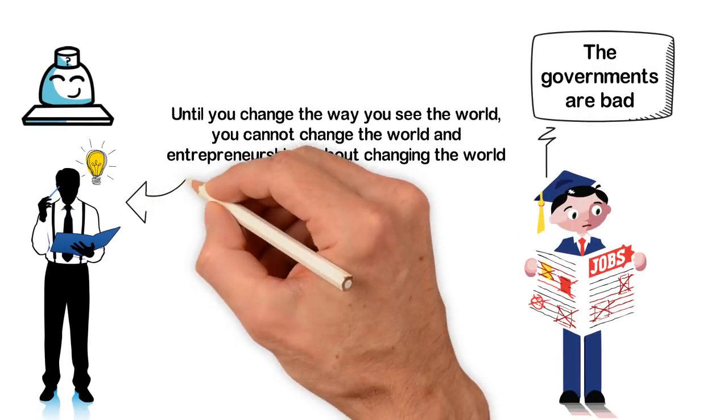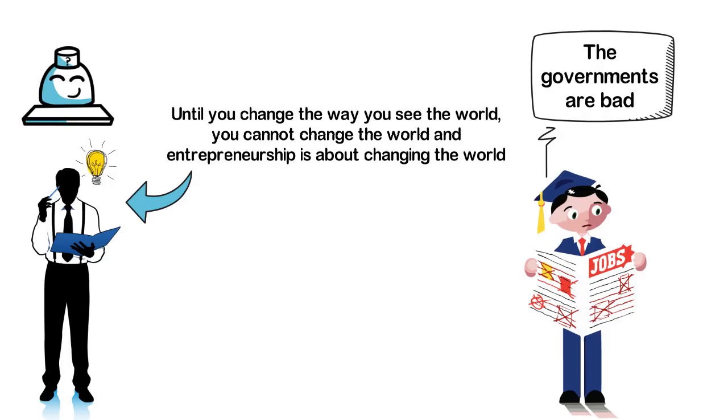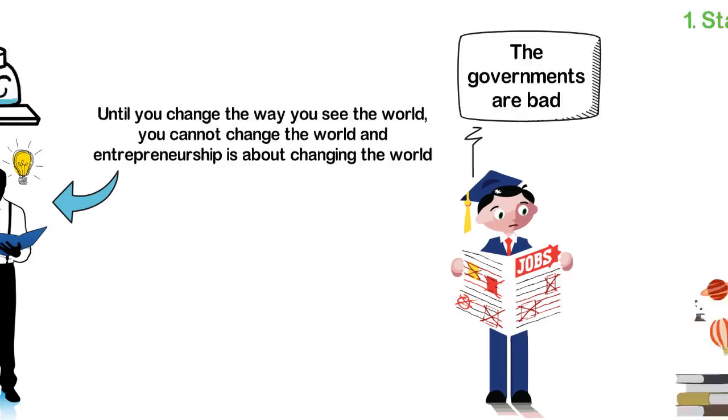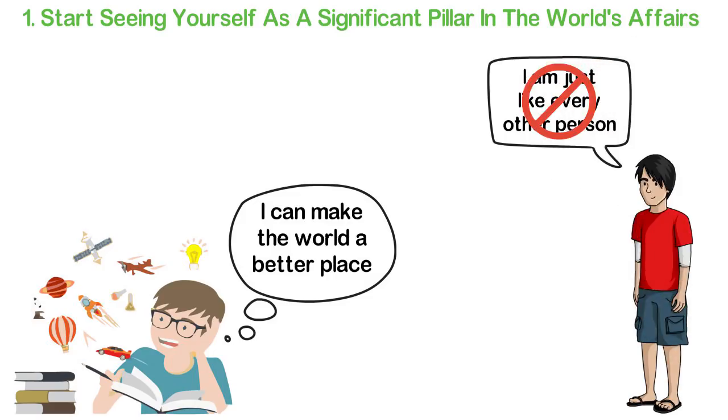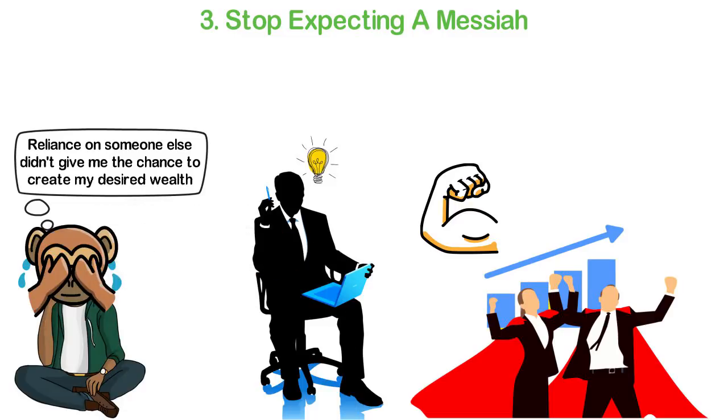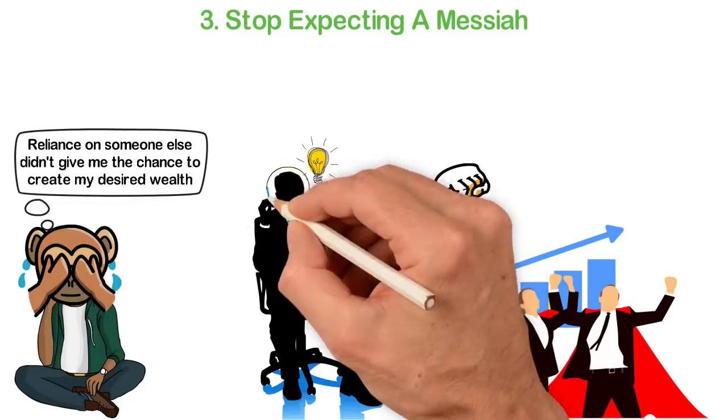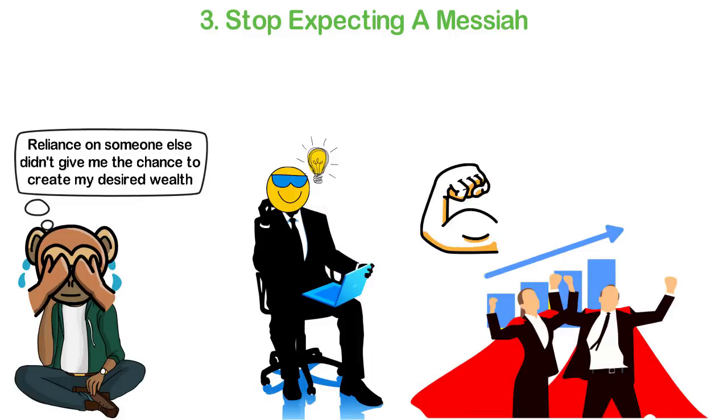In summary, the first thing to do when starting a business isn't to look for the capital or an office building. The very first thing you have to do is to change your worldview. You have to change the way you see yourself in relation to the way you see the world. You have to stop seeing yourself as a victim. You have to start seeing yourself as a victor, a messiah, someone who can challenge and change things, someone who the world needs for important progress and advancement.